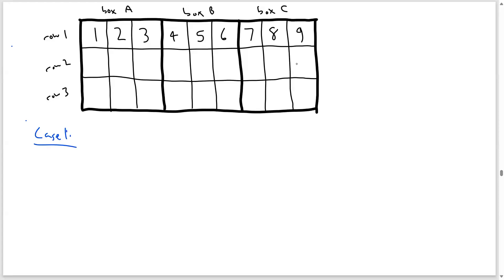We're going to do casework. Our first case is that either box A or box B contains 7, 8, 9 in some order on row 2. For example, 7, 8, 9 or 7, 9, 8. This will be our first case.